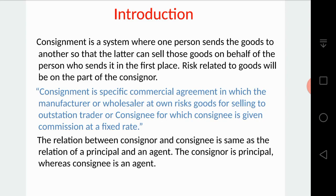The sender is the consigner, and the receiver is the consignee. This consignment is not a sale — it is only the sending of goods from one person to another. Consignment is a specific commercial agreement in which a manufacturer or wholesaler, at his own risk, sends goods for selling to an outstation trader or consignee, for which the consignee is given a fixed rate of commission against selling the goods on behalf of the consigner.